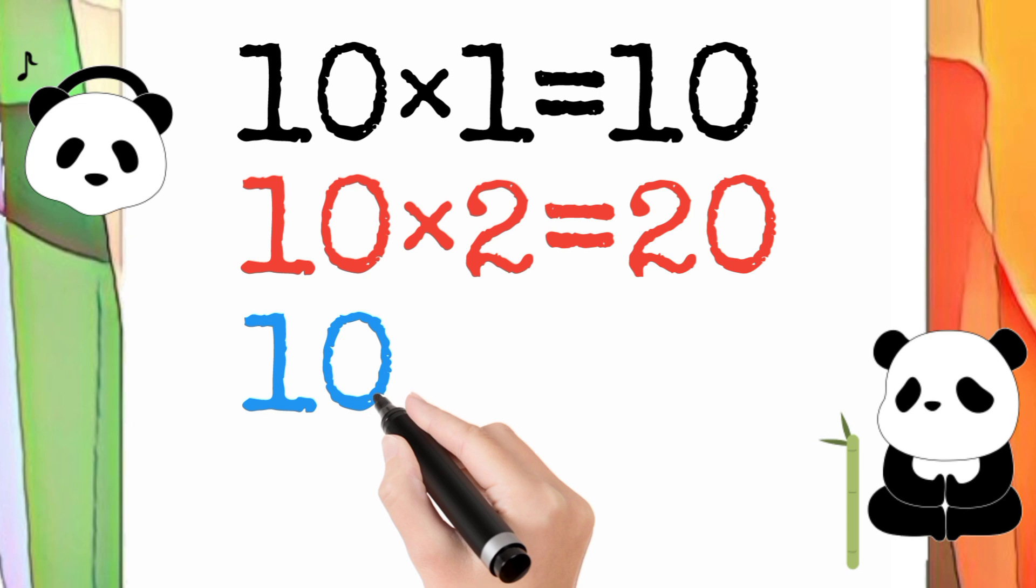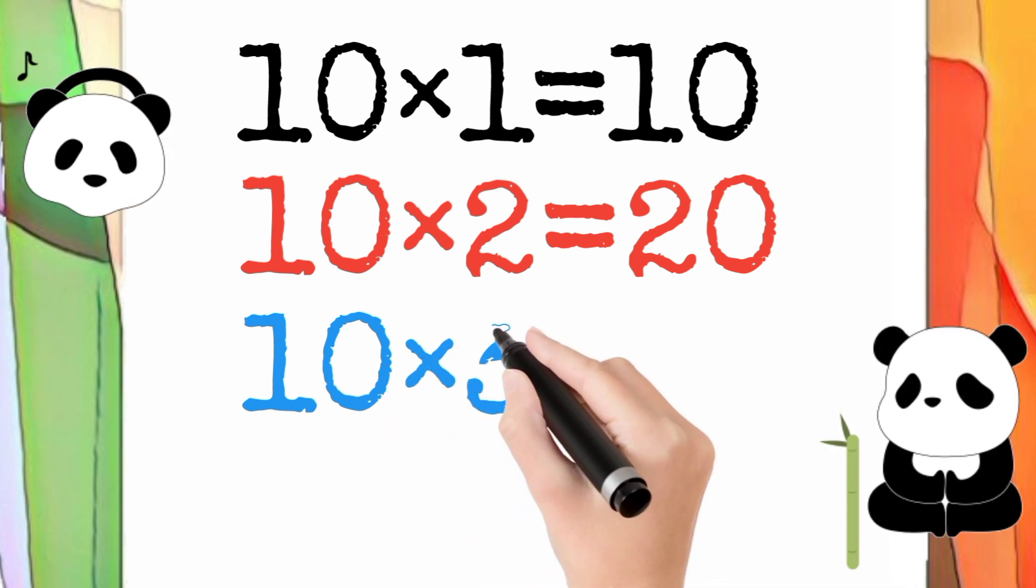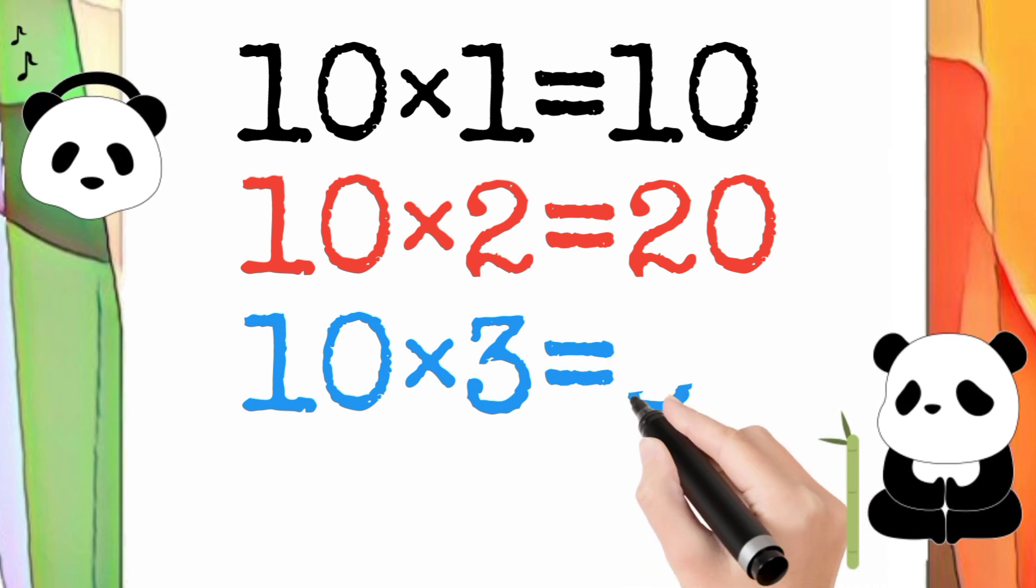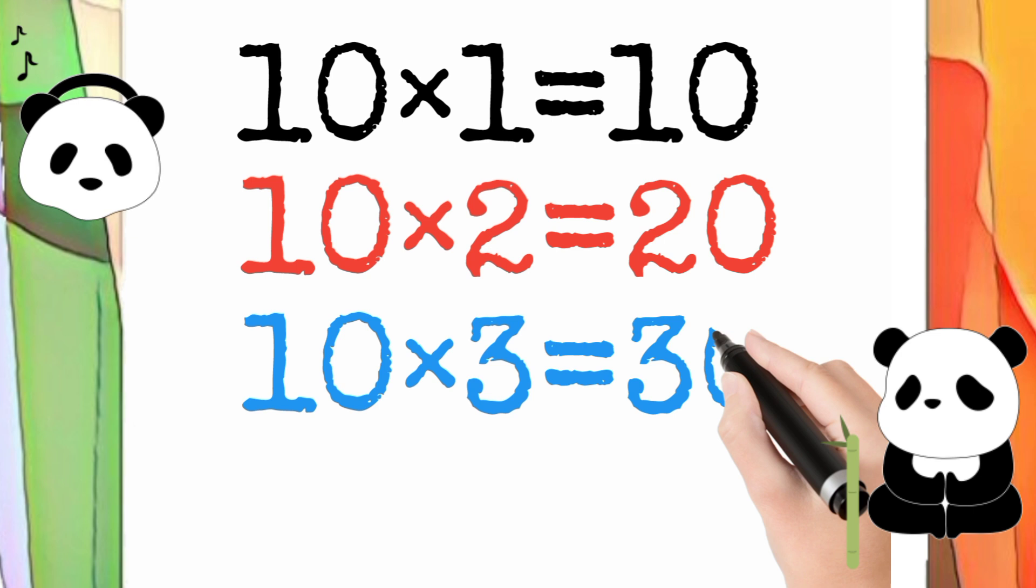10 multiply by 3 is equal to 30. So 10 times 3 equals 30.